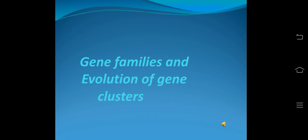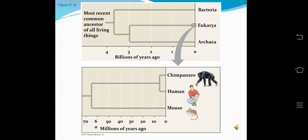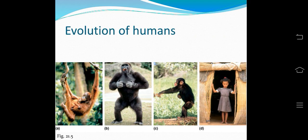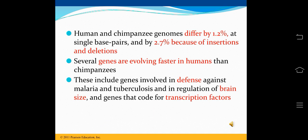Gene families and evolution of gene clusters. The most recent common ancestor of all living things existed billions of years ago, giving rise to bacteria, Archaea, and Eukarya. Comparing distantly related species, highly conserved genes have changed very little over time and help clarify relationships among species that diverged long ago. Bacteria and eukaryotes diverged from each other between two and four billion years ago. Highly conserved genes can be studied in one model organism and results applied to others.